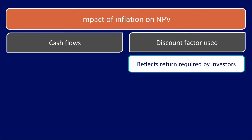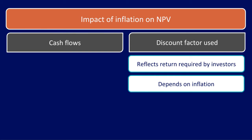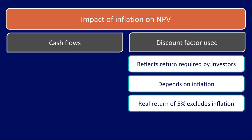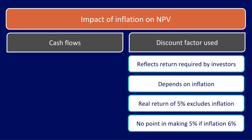The discount factor reflects the return required by investors, and clearly the return will be different depending on whether or not inflation is included. For example, if an investor is looking for a real return of 5%, this effectively means a return that is 5% over and above the rate of inflation. There is little point making a final return of 5% if inflation is 6%, as effectively you would be worse off.